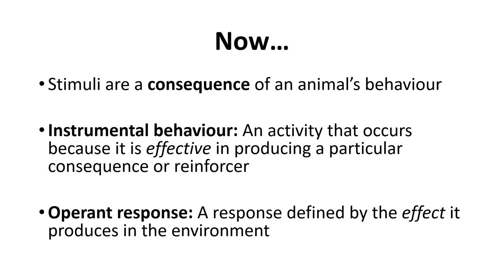Our behavior occurs because it was previously effective at producing certain consequences. We say previously effective because it might still be effective — once you've learned how to use a vending machine, you'll keep using one even if it's not reinforced every time. You might have a couple of bad experiences with a particular machine that doesn't always work, but your behavior has previously worked, so you persist. We'll break down all these components as we work through the chapter.